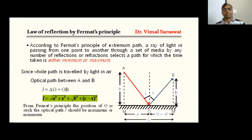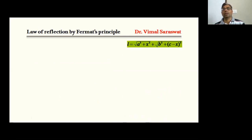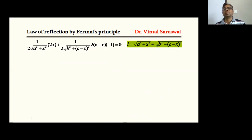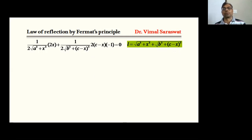From Fermat's principle, the position of O is such that the optical path L should be maximum or minimum, and for maximum or minimum the first differential should be zero, so dL/dx = 0. Differentiating with respect to x: the differential of √(a² + x²) gives 1 / (2√(a² + x²)) times 2x, and the differential of √(b² + (c − x)²) gives 1 / (2√(b² + (c − x)²)) times 2(c − x)(−1). Setting dL/dx = 0.